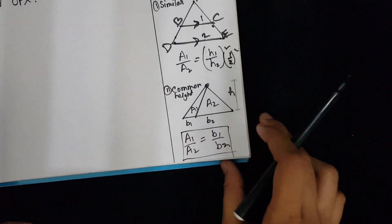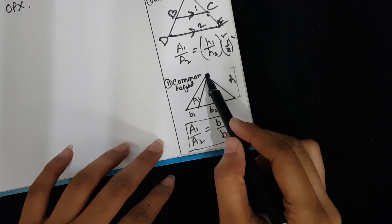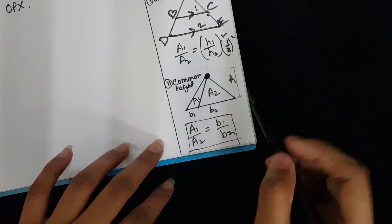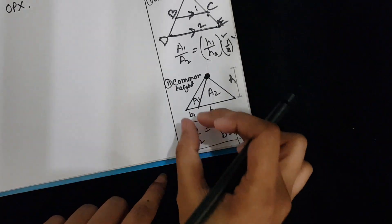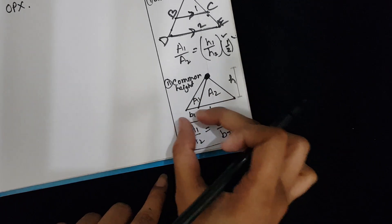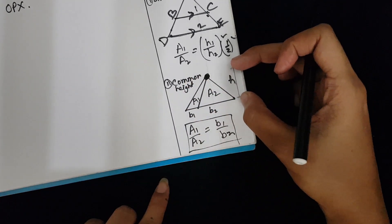But in the case of this type of triangle, where two triangles are emerging from the same common point and the base line is the same for both triangles, the area ratio will be equal to the base ratio. This type of triangle has the same height.